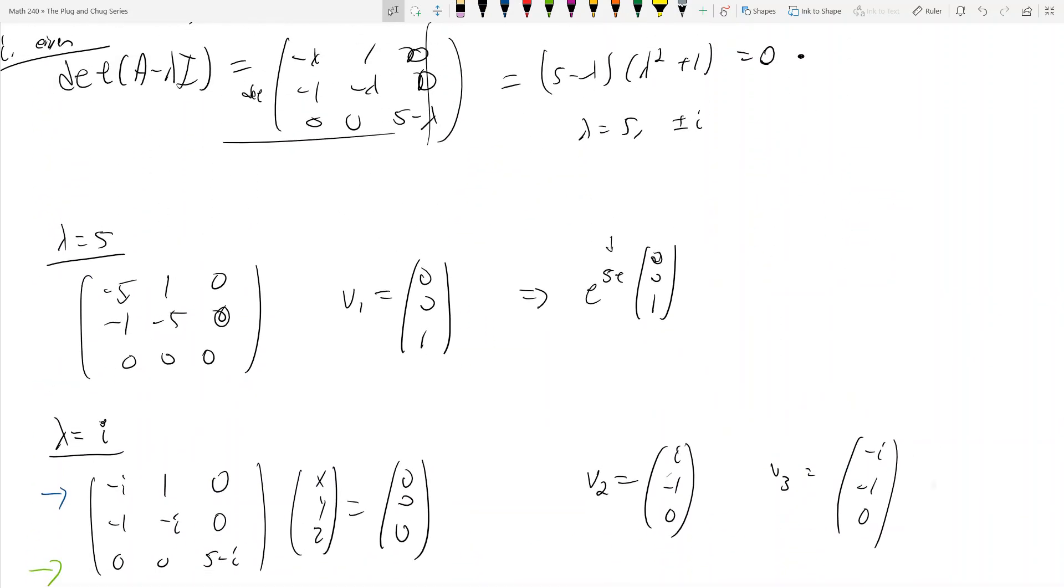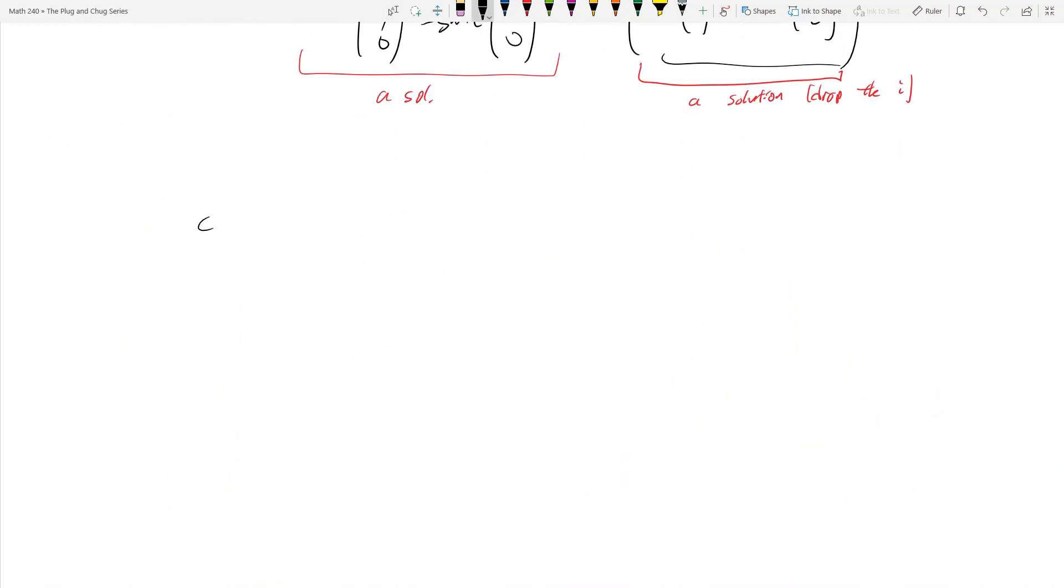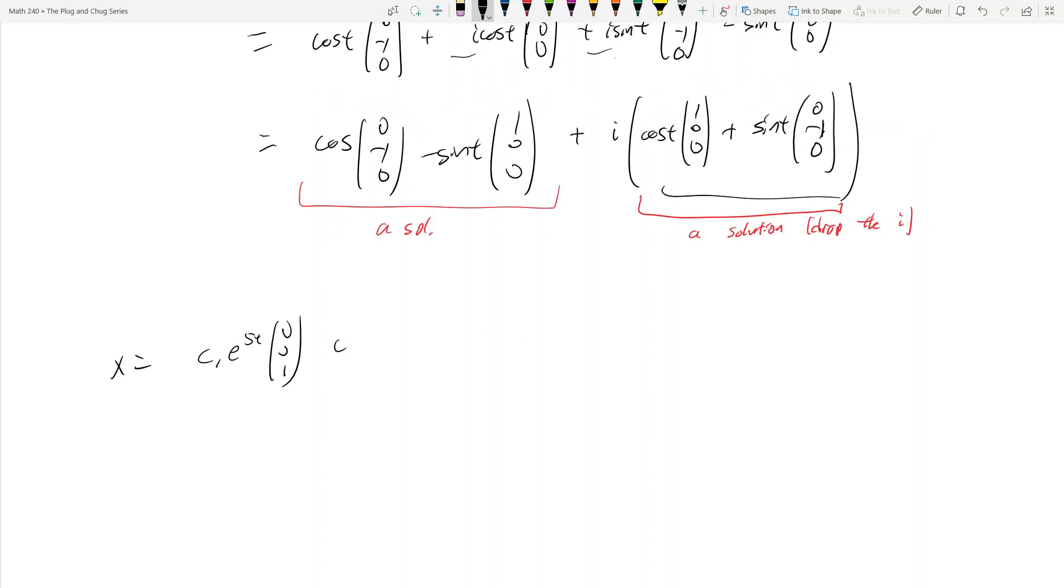Yeah, so you have e to the 5, right? So you get like c1, e to the 5t, 0, 0, 1, plus c2 times all of this, okay? And then plus c3 times all of this. And that's your solution to a complex valued system of differential equations.